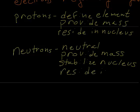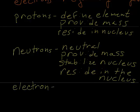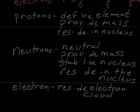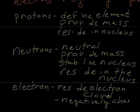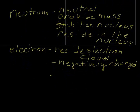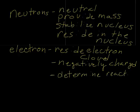The last particle that is part of the atom is the electron. The electron does not reside in the nucleus; it resides in the electron cloud which surrounds the nucleus. It is negatively charged and the number of electrons determine the reactivity or the chemistry of the atom.